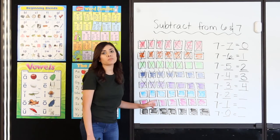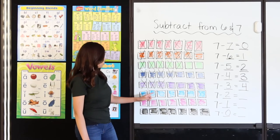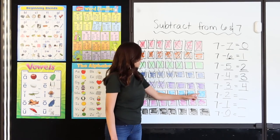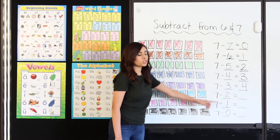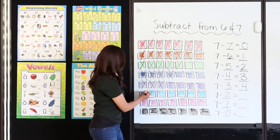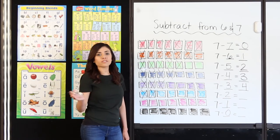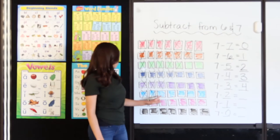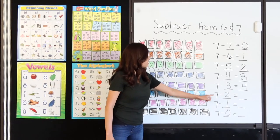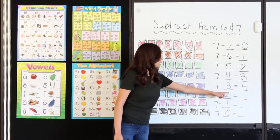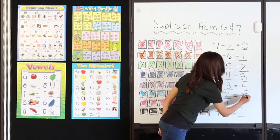I have 7 bright blue squares — 1, 2, 3, 4, 5, 6, 7. I'm going to take away 2: 1, 2. How many do I have left? 1, 2, 3, 4, 5. 7 minus 2 equals 5. Nice work.